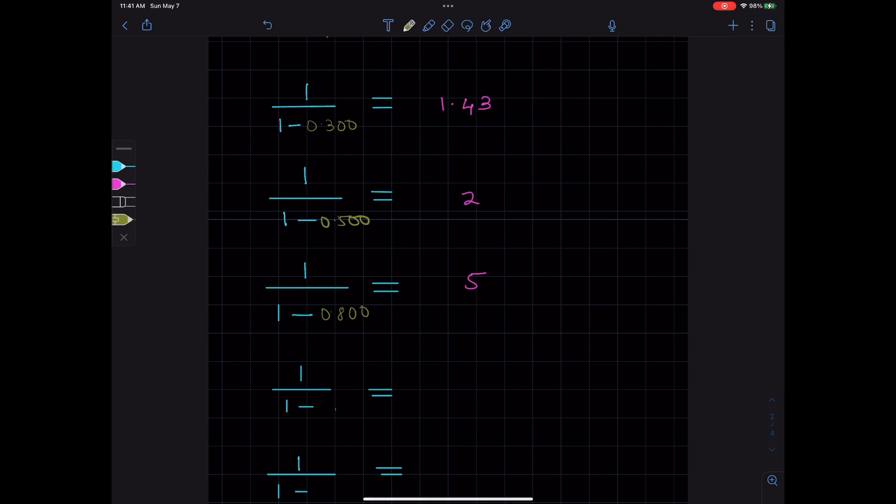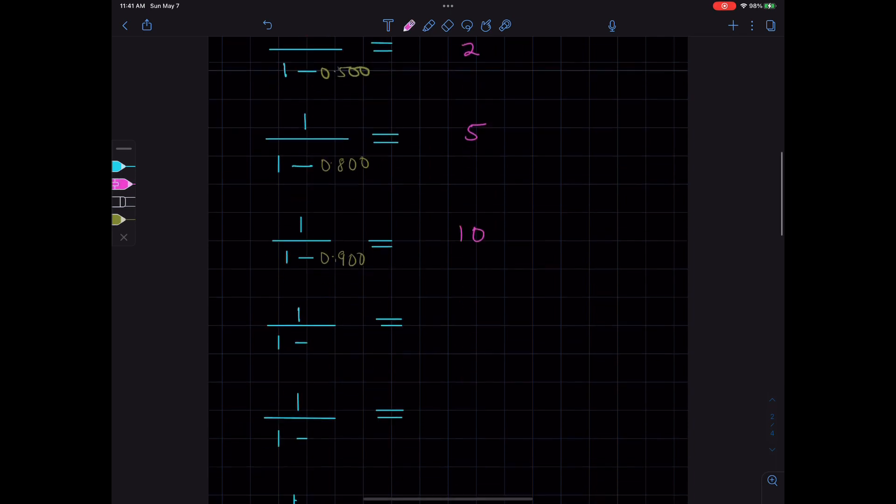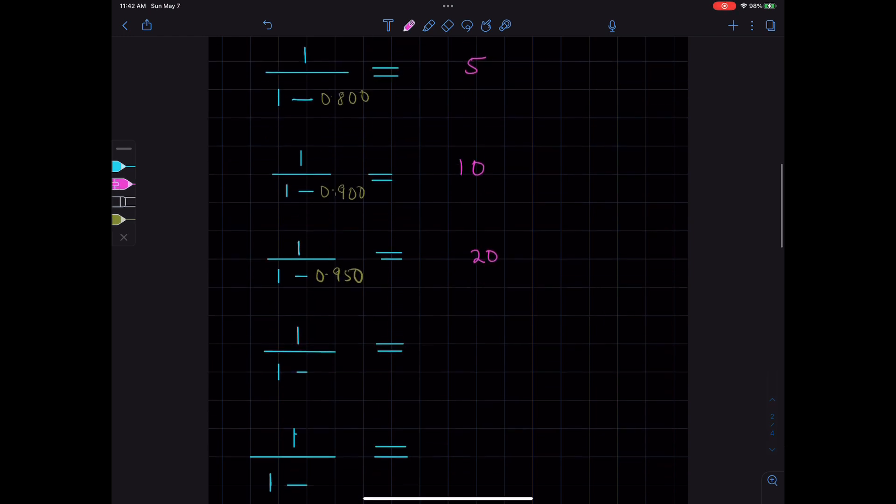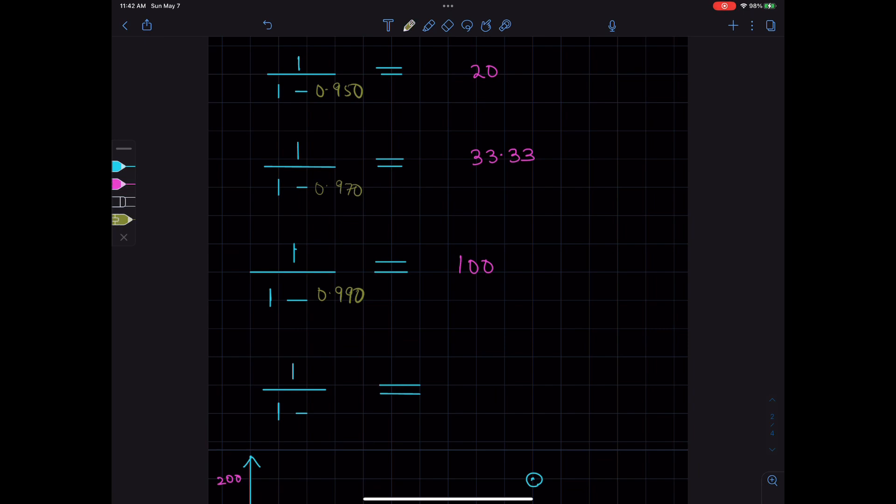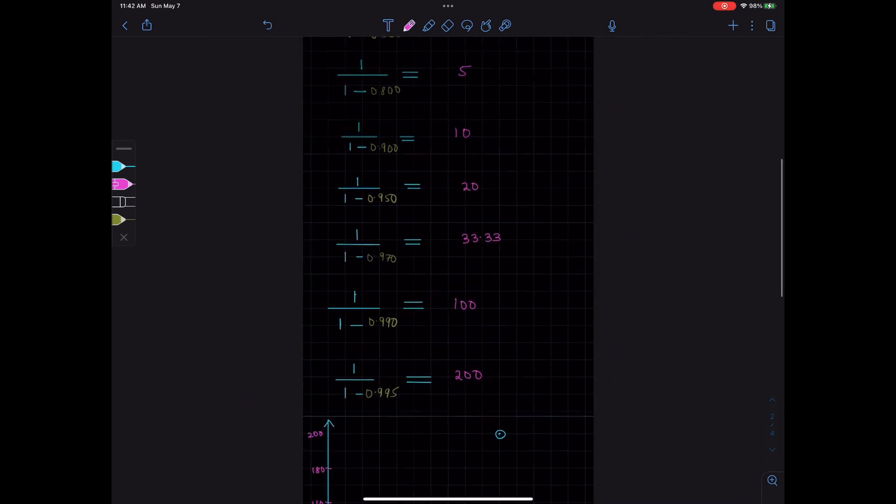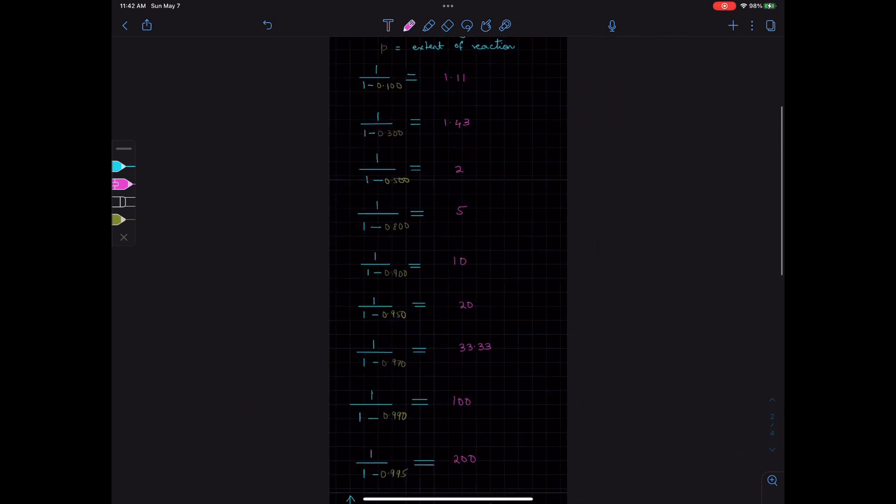1 over 1 minus 0.9 is 10, 1 over 1 minus 0.95 is 20, 1 over 1 minus 0.97 is 33.33, 1 over 1 minus 0.99 is 100, and 1 over 1 minus 0.995 is 200. Now we plot a graph of Xn versus P.